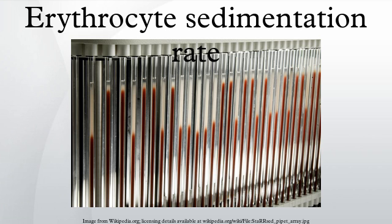The ESR is increased by any cause or focus of inflammation. It is increased in pregnancy, inflammation, anemia, or rheumatoid arthritis, and decreased in polycythemia, sickle cell anemia, hereditary spherocytosis, and congestive heart failure. It may also be increased in kidney cancer.